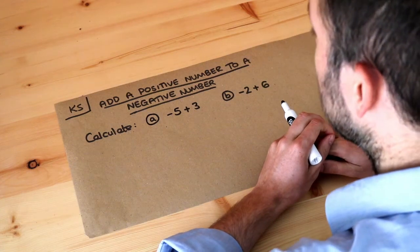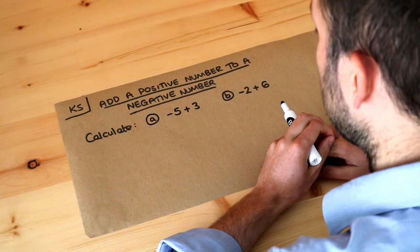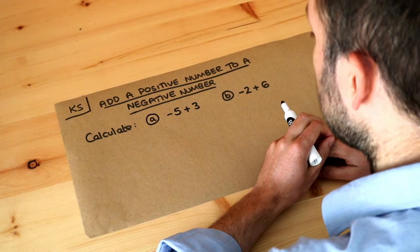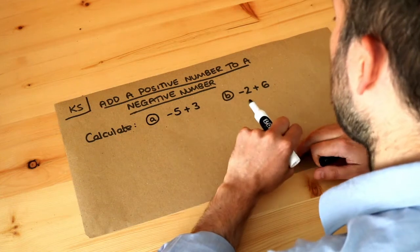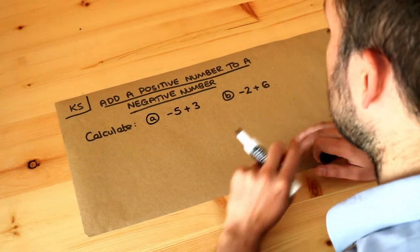Hello and welcome to this Dr. Ross Mass's Key Skills video on adding a positive number to a negative number. So we want to calculate minus 5 add 3, and we want to calculate minus 2 add 6.